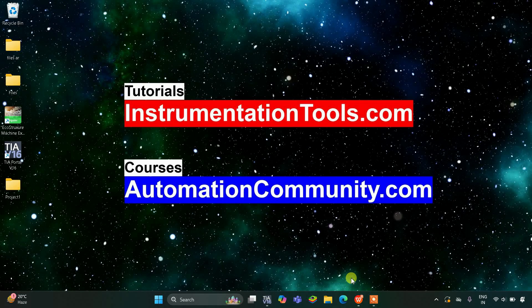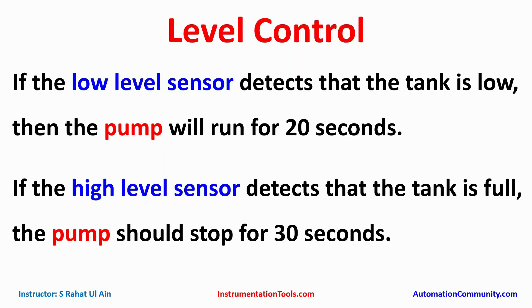Hello everyone, welcome to Automation Community. Today in this video we are going to discuss an example about level control. If the low level sensor detects that the tank is low, then the pump will run for 20 seconds. If the high level sensor detects that the tank is full, the pump should stop for 30 seconds. For this example we will use normally open contacts, normally closed contacts, a pulse timer TP, and a memory bit. Let's move to TIA Portal where we will draw a ladder diagram for this level control example.